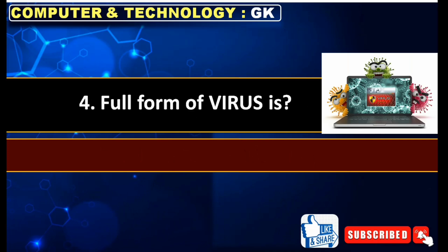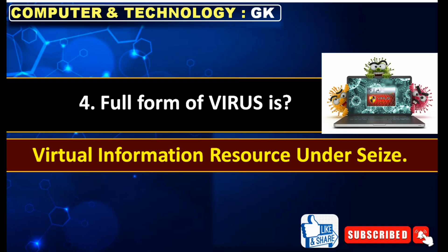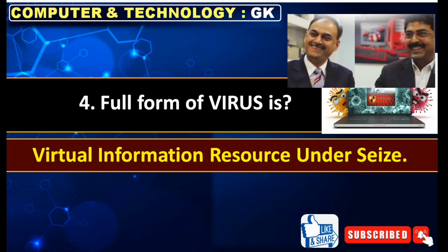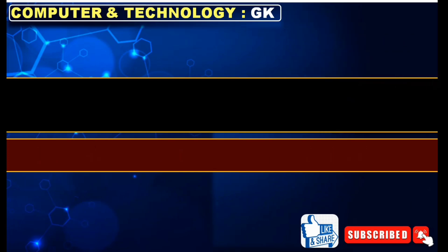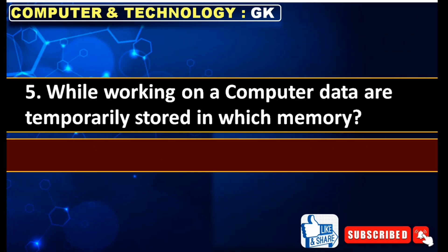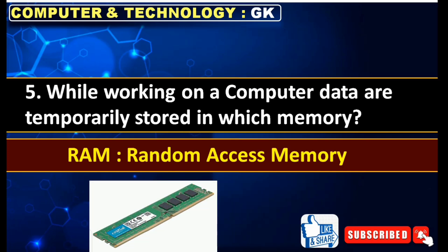What is the full form of VIRUS? VIRUS: Virtual Information Resource Under Siege. Initially this virus was created by two brothers from Pakistan, Basit and Amjad Farooq, and it was made in 1986. The name of the first virus is Brain. While working on a computer, data are temporarily stored in which memory? Answer: RAM, Random Access Memory.